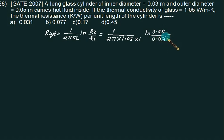So this answer will come very close to 0.077 K per Watt. So choice B is the correct choice.